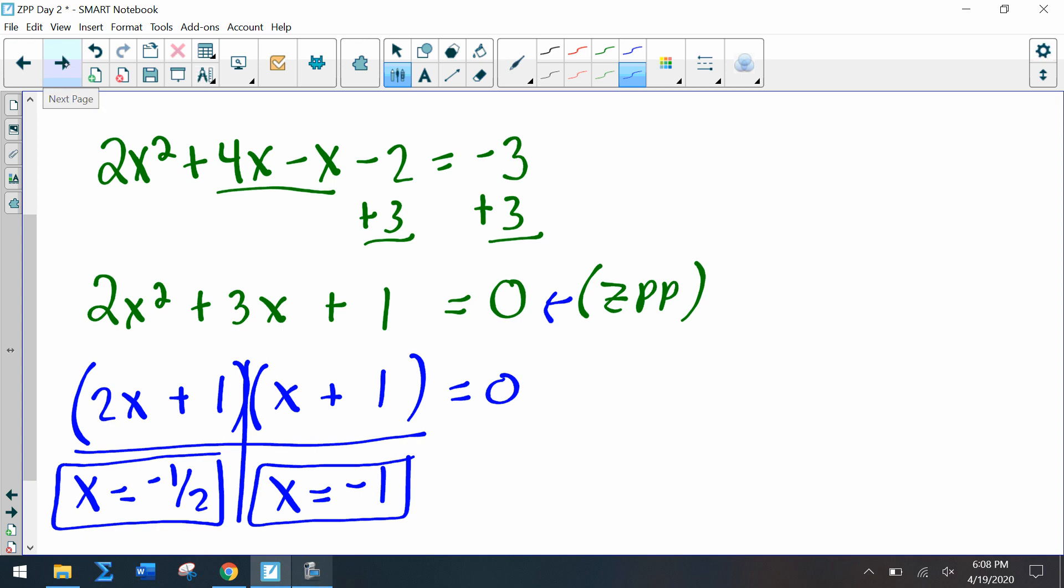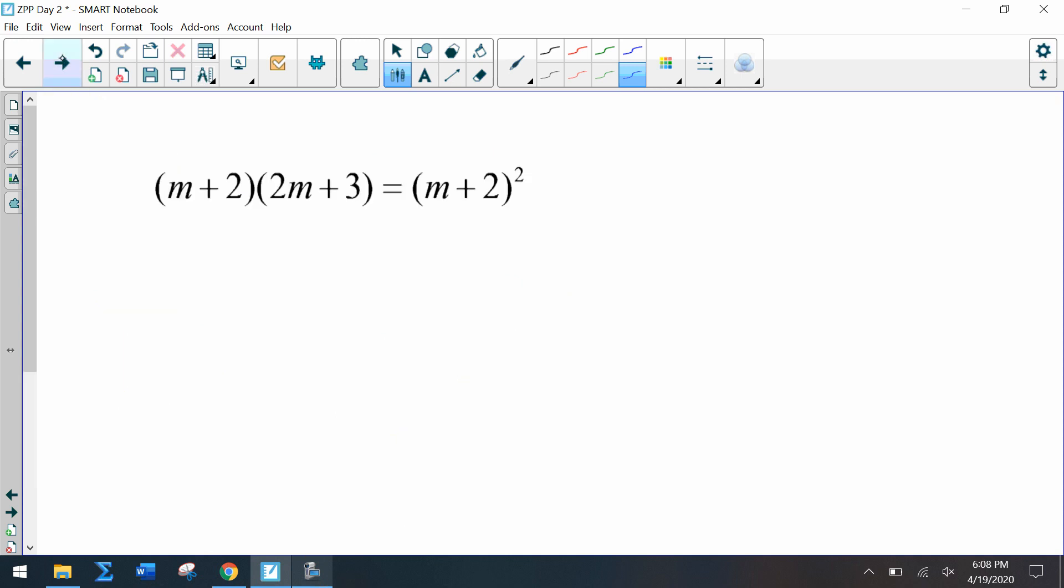Okay, and now our last problem. This one looks super challenging, however we just have to simplify everything first. So let's multiply what's on the left, and then let's multiply what's on the right. But this squared term here doesn't tell you to distribute that squared, it tells you to expand and multiply those two. So I have m² + 4m + 4 after we simplify it on the right.